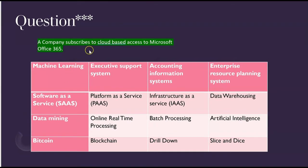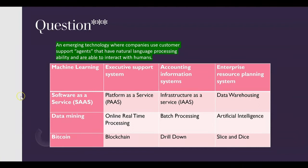How about this one: 'A company subscribes to cloud-based access to Microsoft Office 365.' That would be software as a service. Here, instead of buying the software, you subscribe to a cloud-based version of it — that's software as a service. Why isn't it platform as a service? Because in this one we are accessing the software, not creating it. If we were creating software on a cloud-based platform, then it would be platform as a service. Here we're just accessing the software — software as a service.